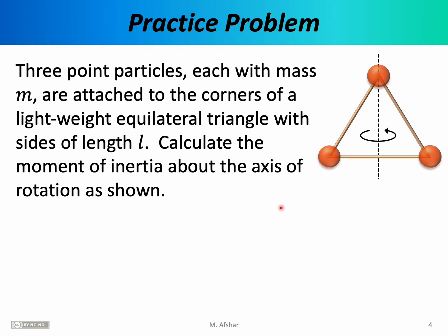Let's do another practice problem involving moment of inertia, this time for a more interesting object. Three point particles, each with mass m, are attached to the corners of a lightweight equilateral triangle with sides of length L. Calculate the moment of inertia about the axis of rotation as shown. The three rods forming the triangle are massless, but we have three spheres each of mass m attached to the corners, separated from each other by length L. The axis of rotation runs vertically. It's important to know where the axis of rotation is and how it's oriented, because we need to know the distance of each particle relative to it.